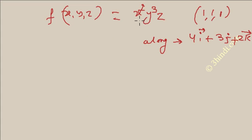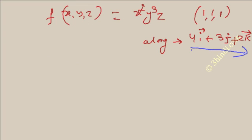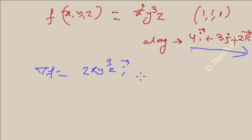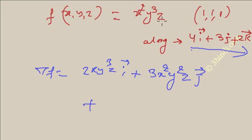Suppose f is a function of x, y, z, and we need the directional derivative at a given point along a given vector. The first step is to find del f. Differentiating with respect to x gives 2xy³z i; differentiating with respect to y gives 3x²y²z j; and differentiating with respect to z gives x²y³ k.